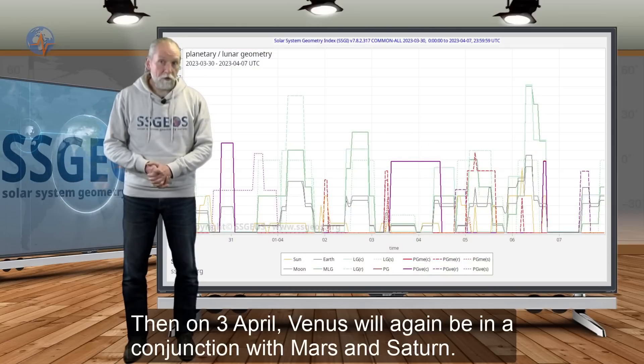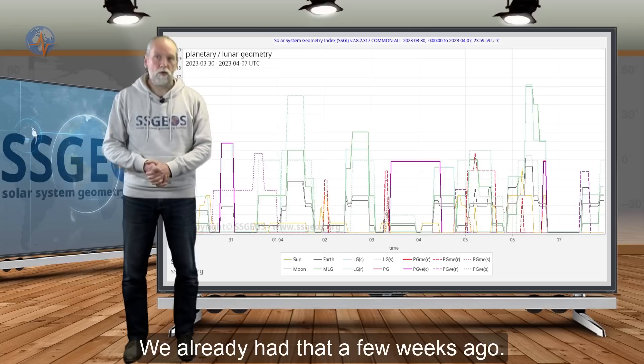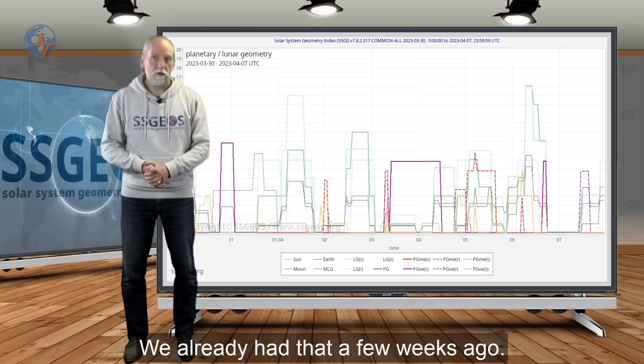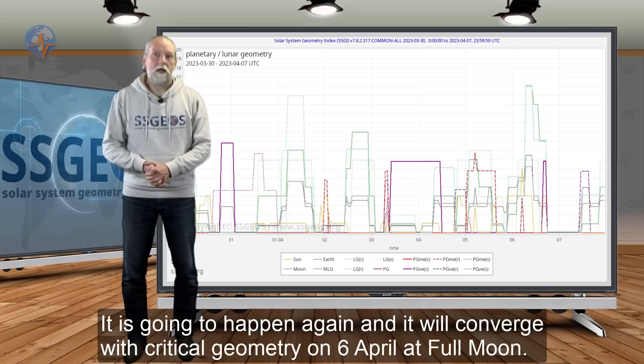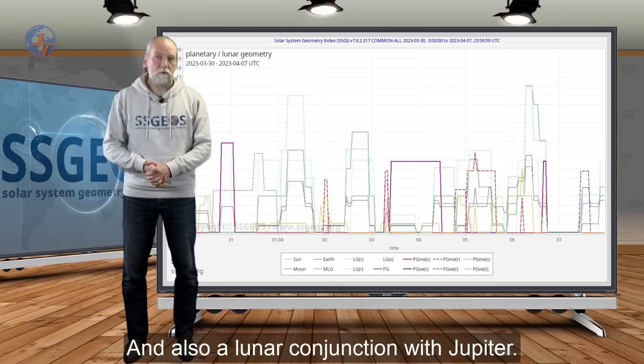Then on April 3rd, Venus will again be in a conjunction with Mars and Saturn. We already had that a few weeks ago. It's going to happen again and it will converge more or less with critical geometry on April 6th at full moon, and also a conjunction with Jupiter.